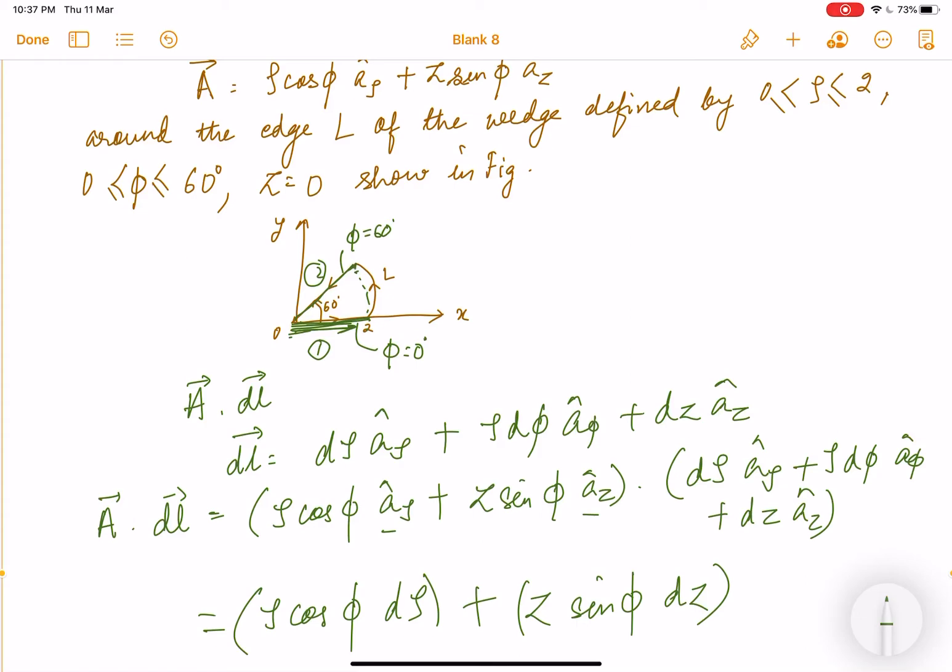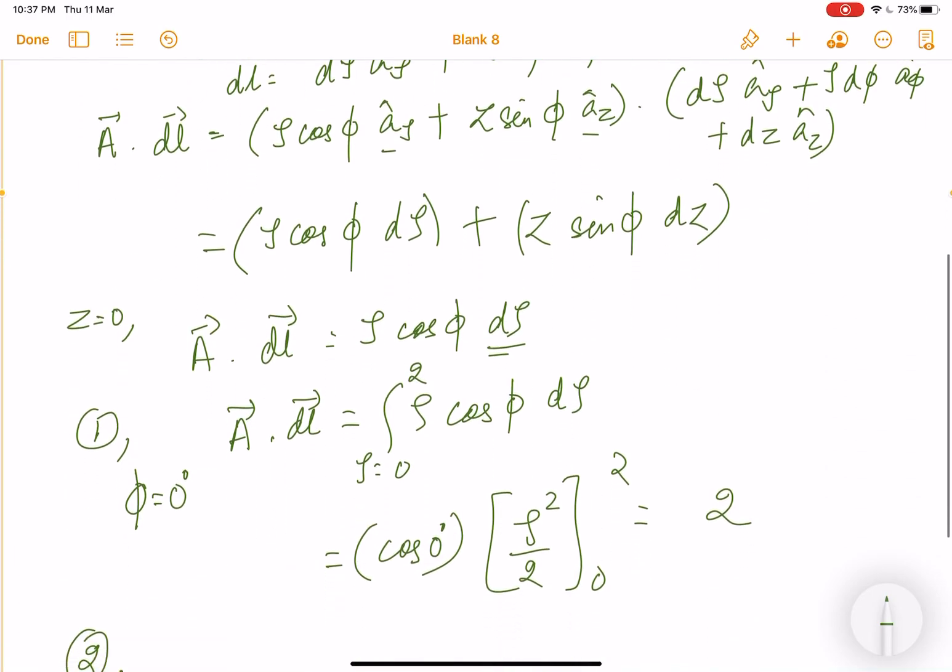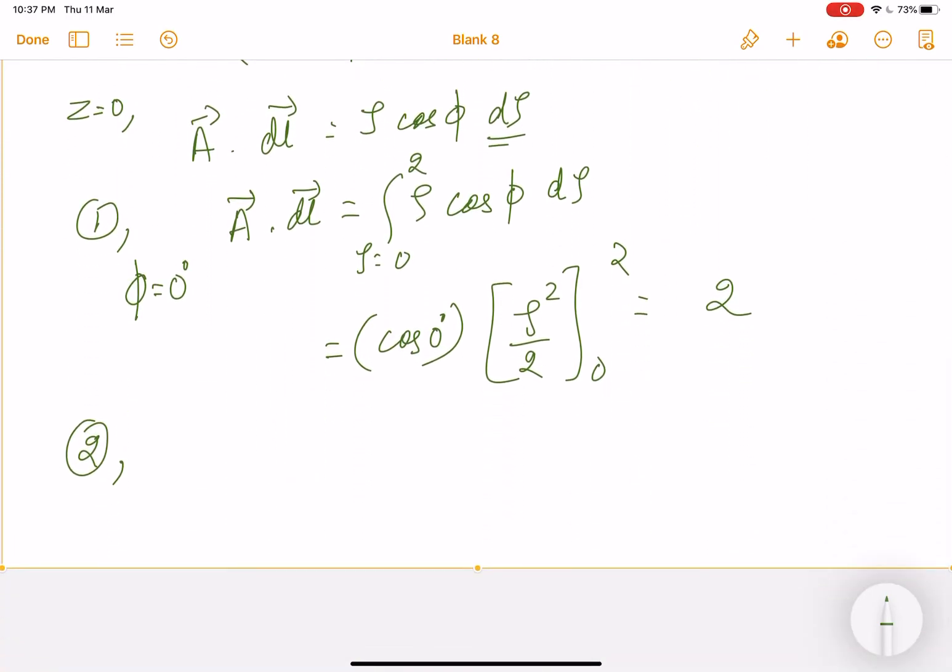at this point ρ is 2 and here it is 0. So from 2 to 0 we are moving. Same way, A dot dl equals ρ cos φ dρ, and ρ varies from 2 to 0. And what is φ